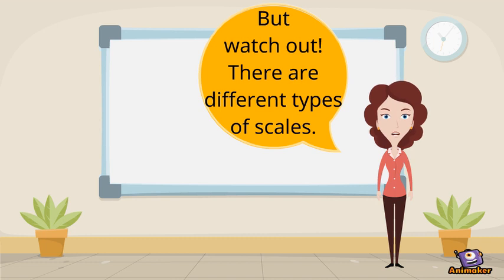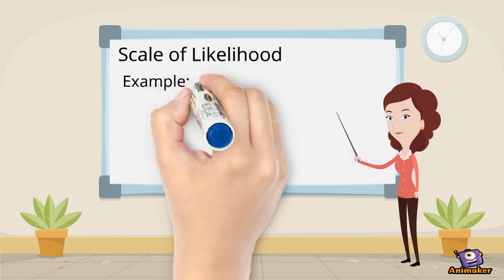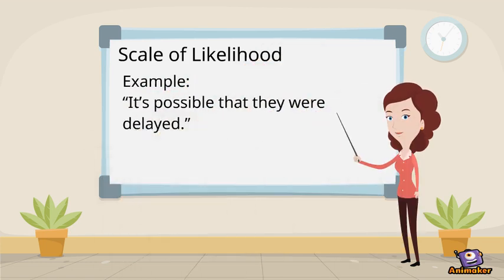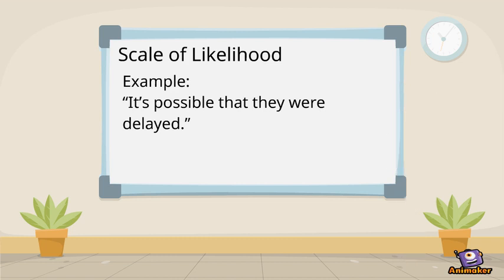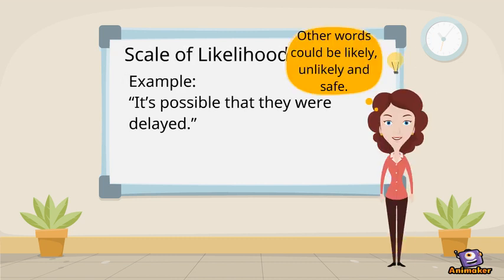But watch out — there are different types of scales. One of these is the scale of likelihood. Of course, there is an example for this one as well. Words on these scales are: possible, likely, unlikely, safe, and so on.